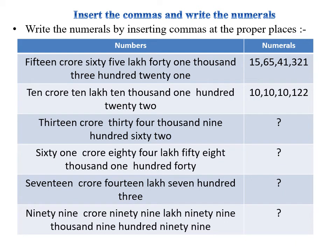Now we will insert proper commas and write the numerals by reading the number. First: fifteen crore sixty-five lakh forty-one thousand three hundred and twenty-one. Remember, dear students, after each period you must put a comma. For example: fifteen crore, comma, sixty-five lakh, comma, forty-one thousand, comma, and then three hundred and twenty-one. Second: ten crore, comma, ten lakh, comma, ten thousand, comma, one hundred and twenty-two.